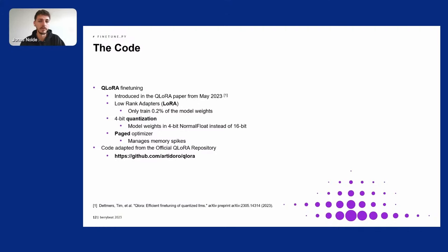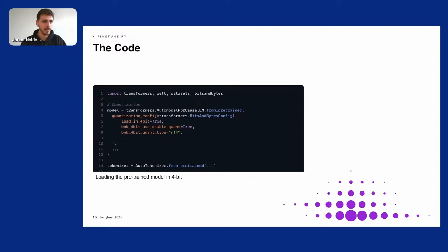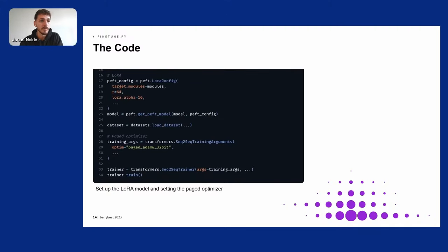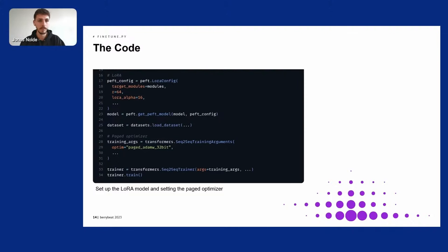In line 4 we set up the model and do the quantization. If you use the double quantization and the 4-bit normal float, you get the best performance for the lowest memory footprint. In line 17 we set up the LoRA adapter, where we define our target modules — these are the layers where the adapter weights are inserted. We can set the rank, which is basically the size of the adapter weights, and also the LoRA alpha scaling factor, which influences how much the adapter plays into the result.